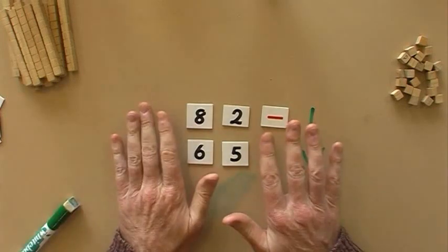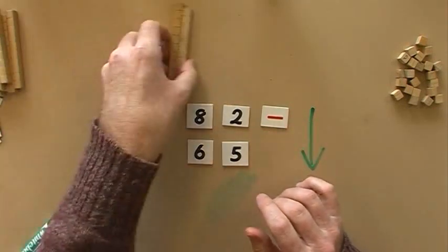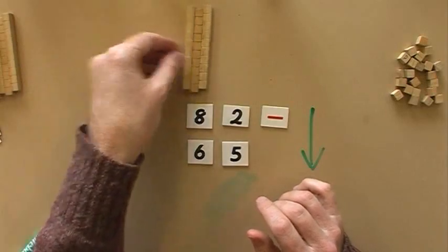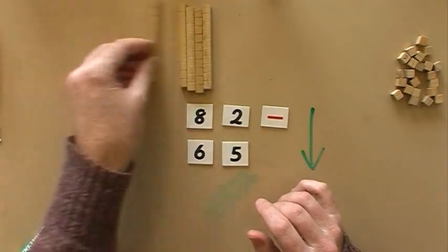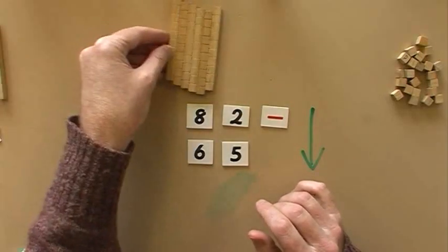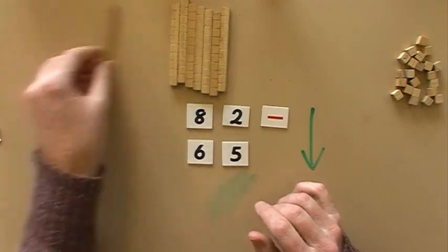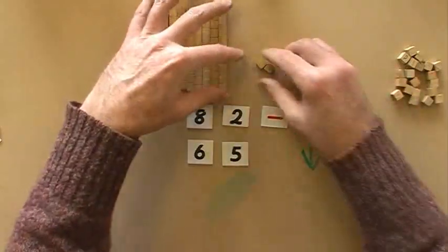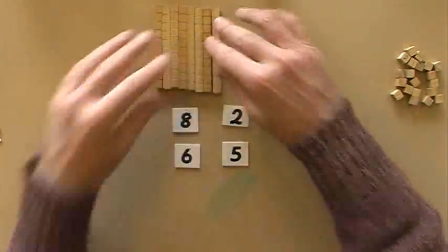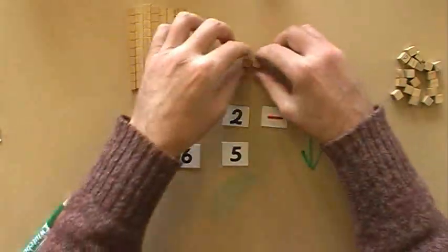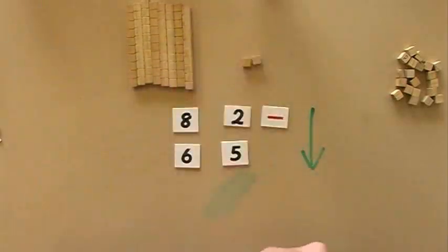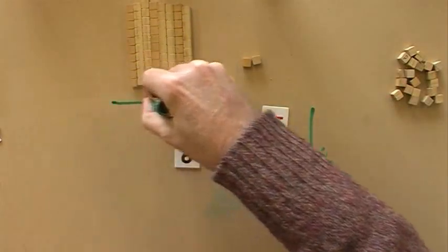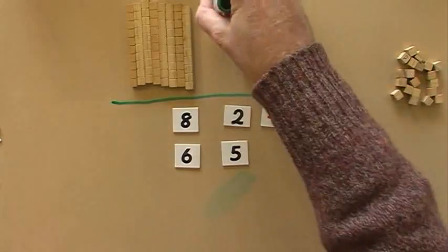So let's make these numbers. I'm going to make 82: 10, 20, 30, 40, 50, 60, 70, 80. There's the 80, and of course here's the 2. And I'm actually going to separate this out into a place value chart that I'm going to draw right on this table. Perfect.